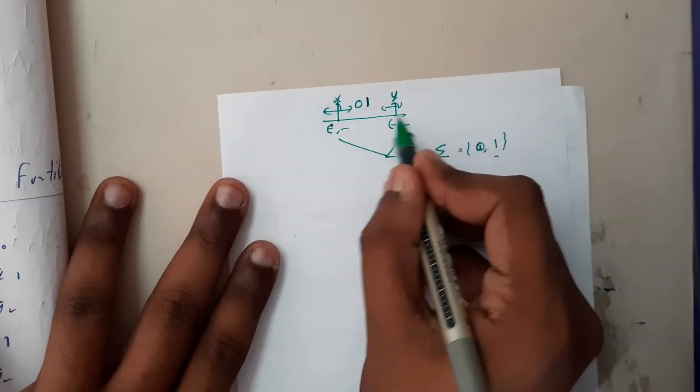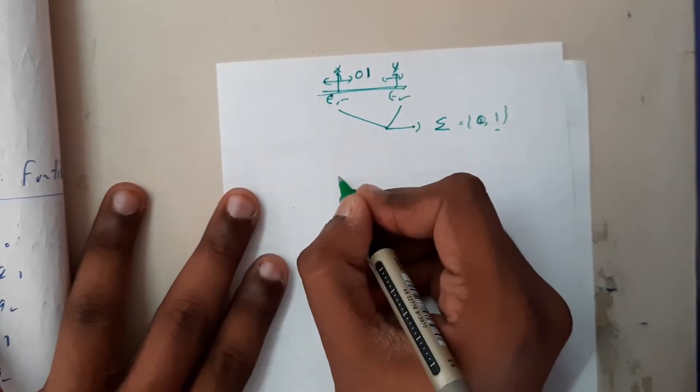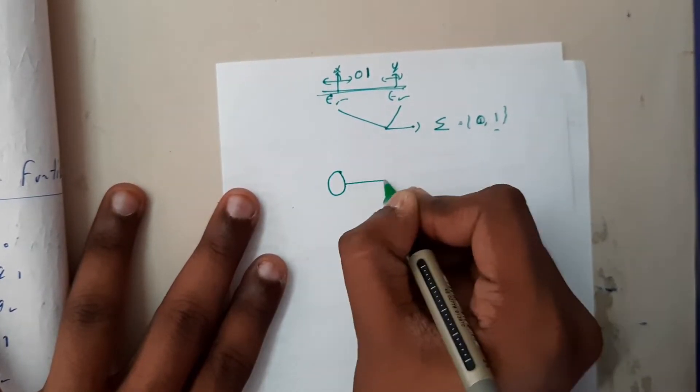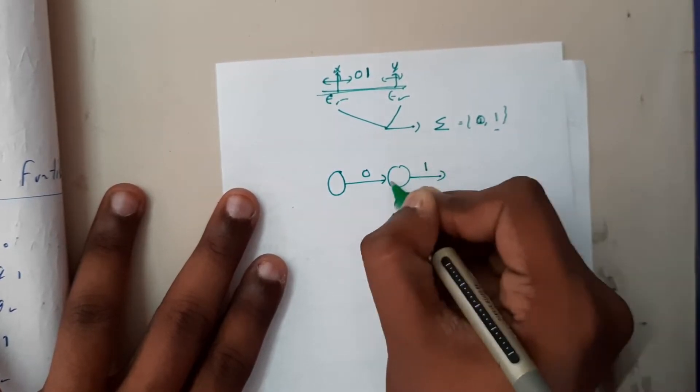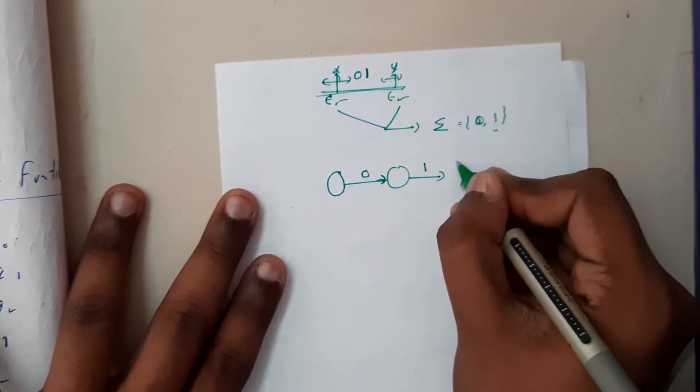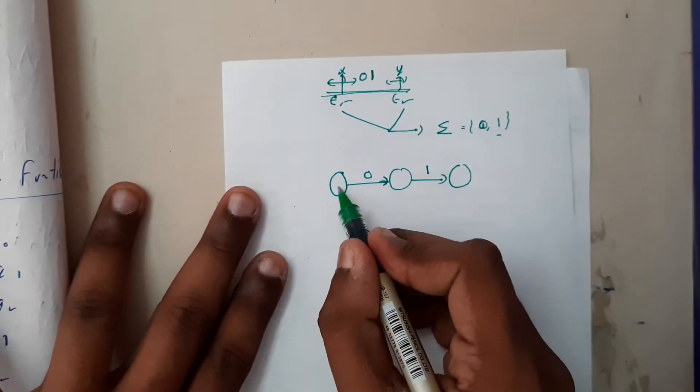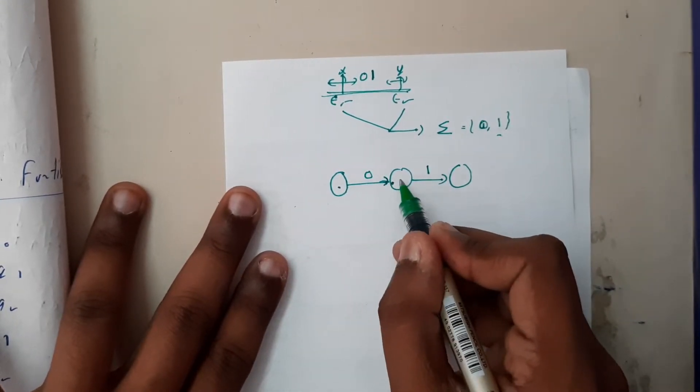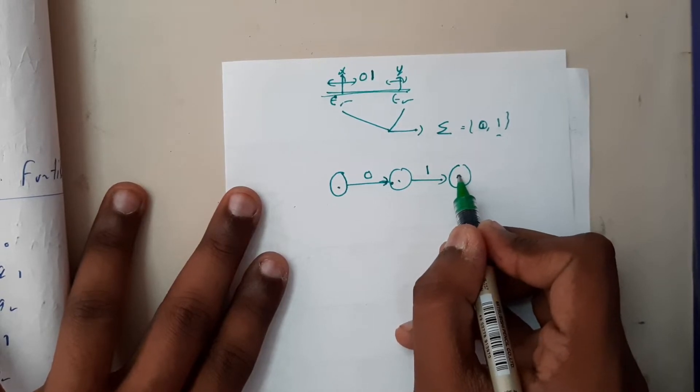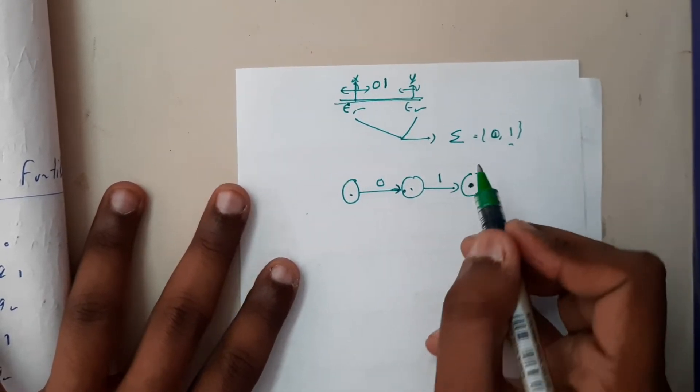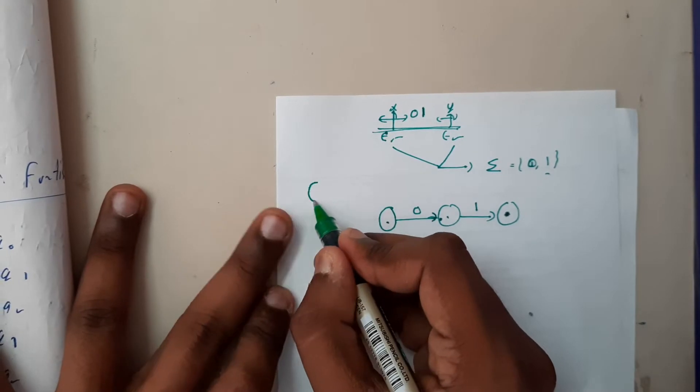Now first let us draw for zero and for one. From a particular state on zero you'll be going to one state, on one you'll be going to one state. From a state on zero, then one.